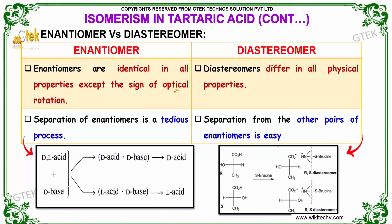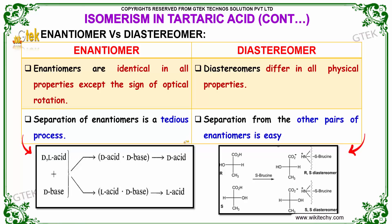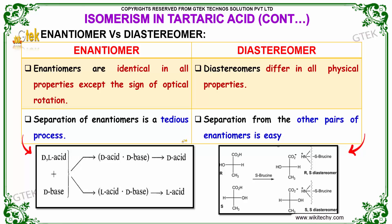Enantiomers are identical in all properties except the sign of optical rotation, whereas diastereomers differ in all physical properties when compared to enantiomers. The separation of enantiomers is a very tough and tedious process, whereas for diastereomers, separation from other pairs of enantiomers is not so tedious.